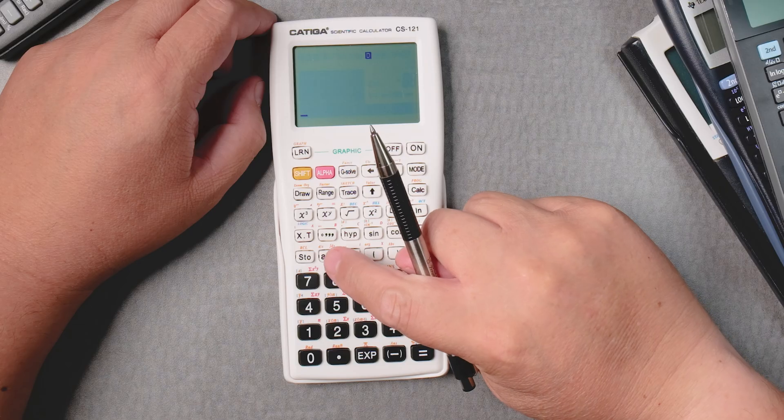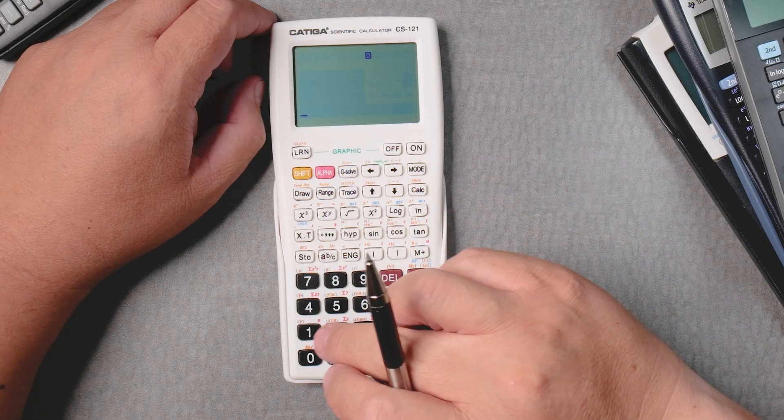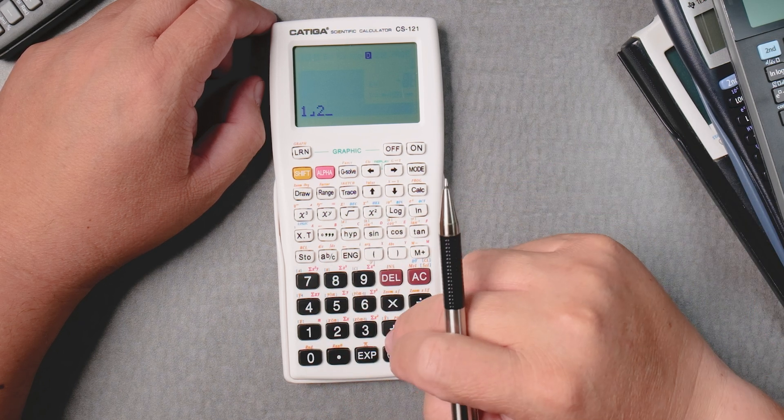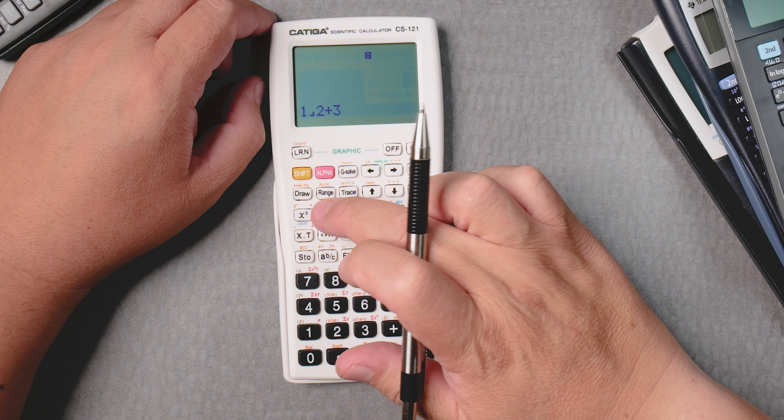It has an ABC button. So let's do 1, ABC, 2, plus 3, ABC, 4.